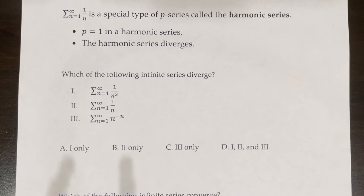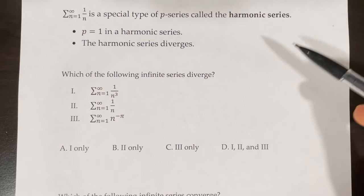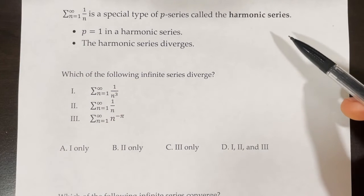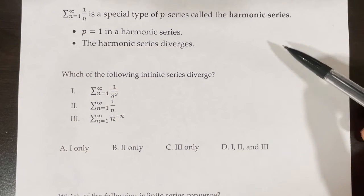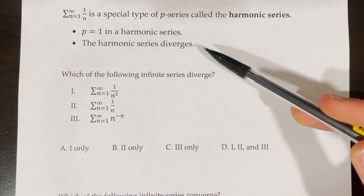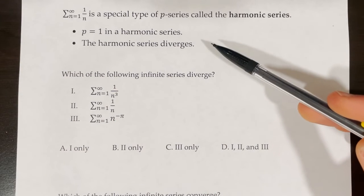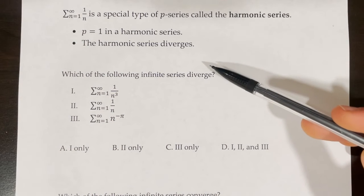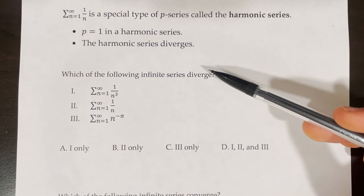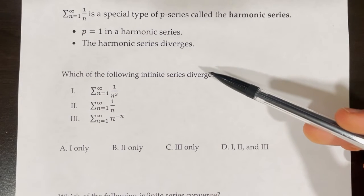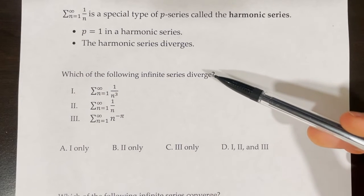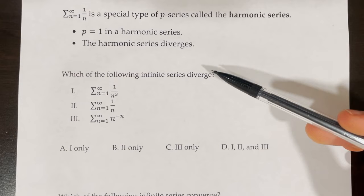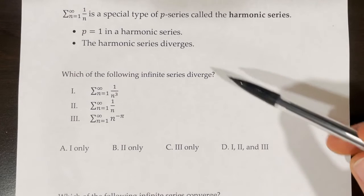The series from n equals 1 to infinity of 1 over n is a special type of p-series called the harmonic series. p is equal to 1 in a harmonic series, and this series diverges because we know that if p is less than or equal to 1 in the p-series, then our series is going to diverge, and in this case it's equal to 1.